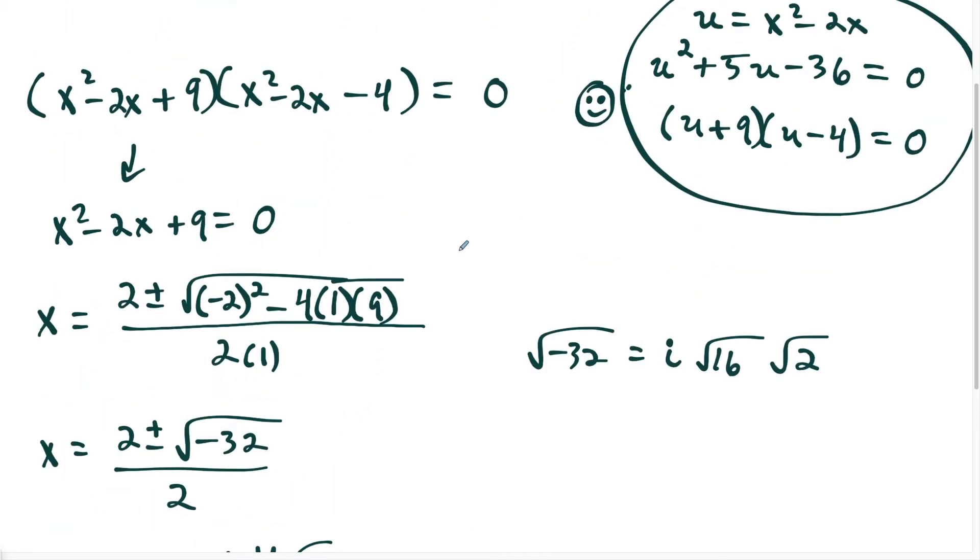But now what we have to do is we go back to this equation here, and we're going to set the other quadratic equal to zero and solve. So now we're going to take this quadratic over here, and we'll change colors. We're going to solve, we have x squared minus 2x minus 4 is equal to zero.